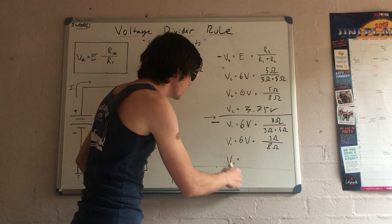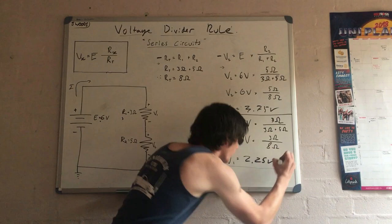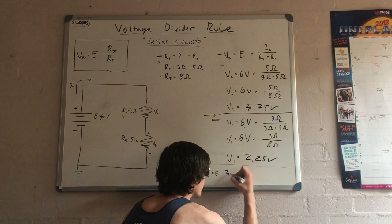What's R1? 3 ohms. You get the idea, mate. So you punt the values in. You're going to get an answer of 2.25 volts. Don't forget those units, Nathan. Right.